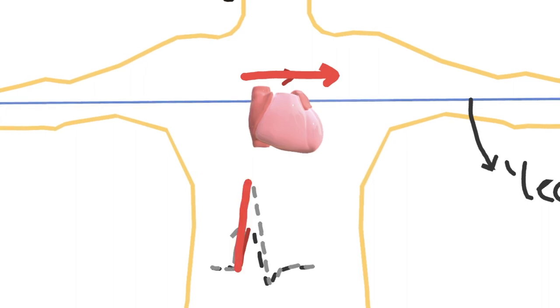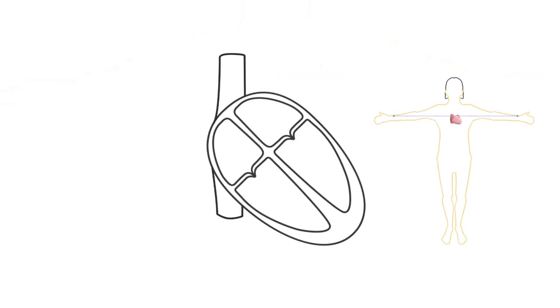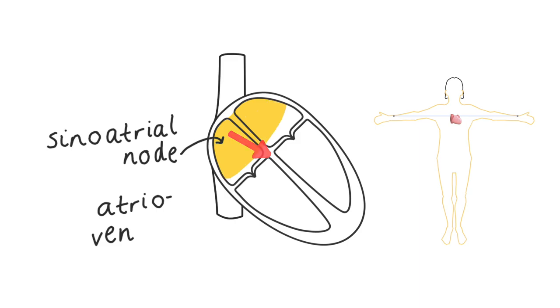So with that in mind, let's draw out the heart and appreciate how the current flows through it with each heart beat. It starts off in an area called the sinoatrial node, which is located here in the right atrium, just near the entrance of the superior vena cava.